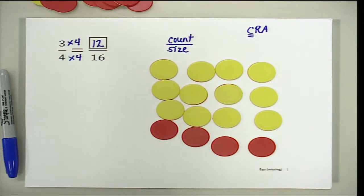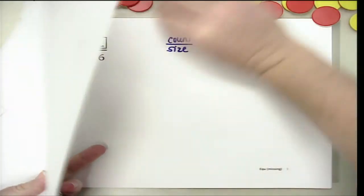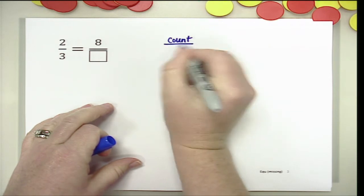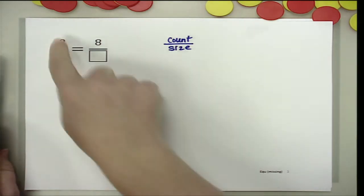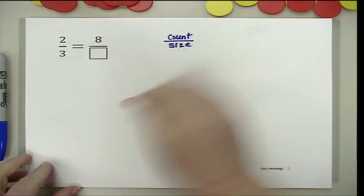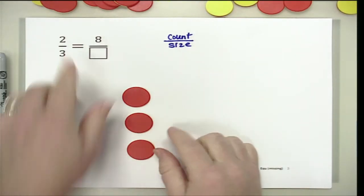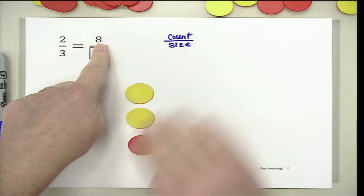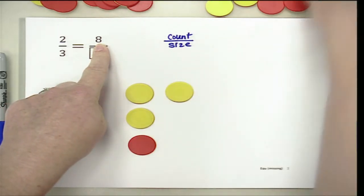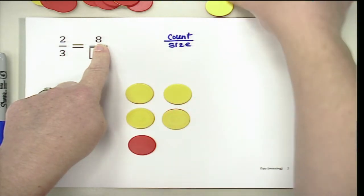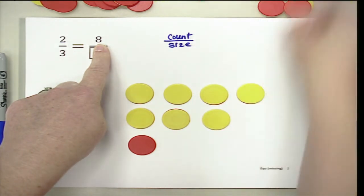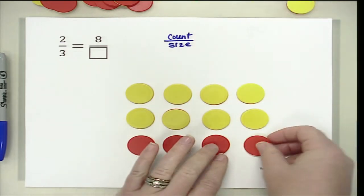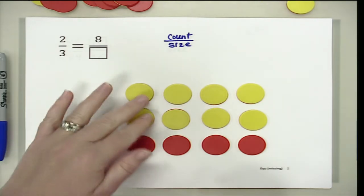For this next one, the size is the missing value. We want to remember: count is the numerator, size is the denominator — that is their job. I have a size of 3, so I first represent my size. Then my count is 2, so I say 1, 2. Now it looks like I need to have my count be 8, so I am going to continue adding to my count until I have a count of 8: 2, 4, 5, 6, 7, 8. Since we need the size the same, every row must look exactly the same. Double-checking: my count is 2, 4, 6, 8.